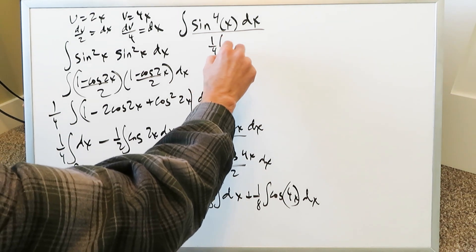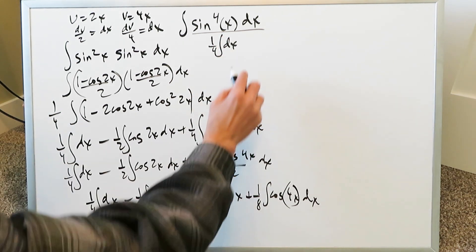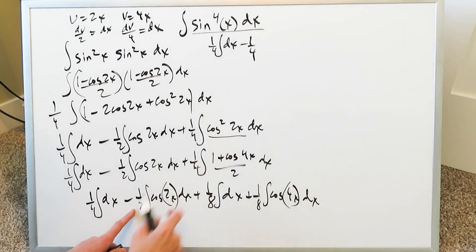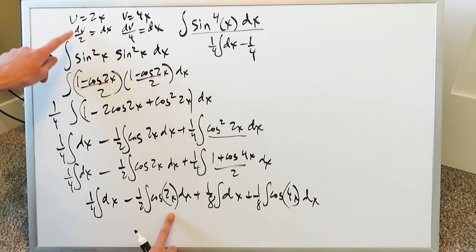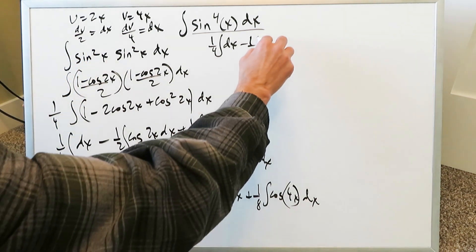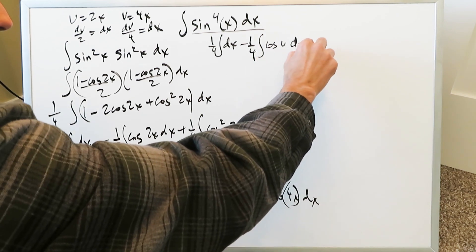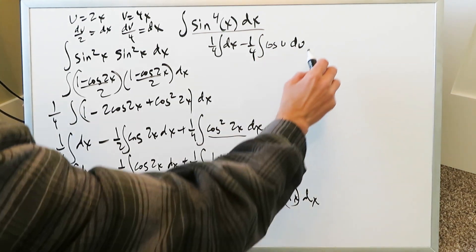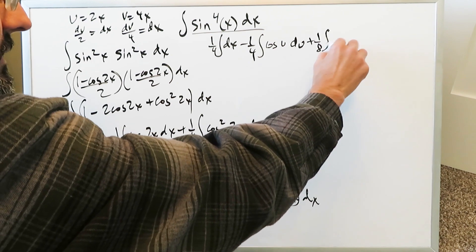We'll have a 1 over 4 integral dx. Here we'll have a minus 1 over 4. This 1 over 2 coming from here du over 2 will hit with this 1 over 2. You'll get 1 over 4 integral cosine u du. You'll have a 1 over 8 integral dx.